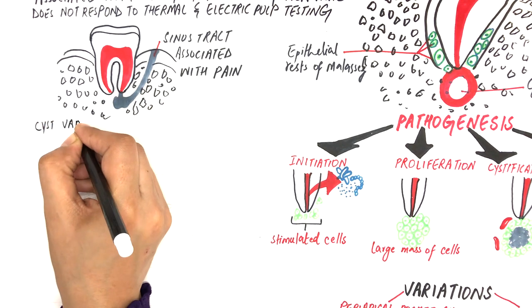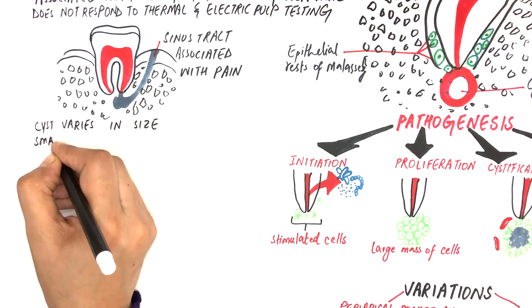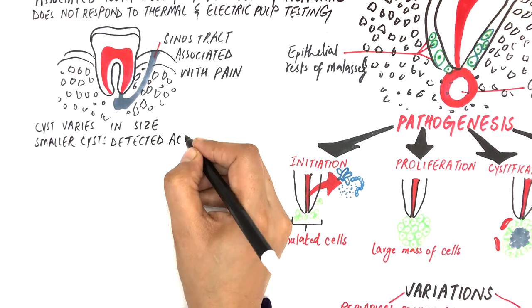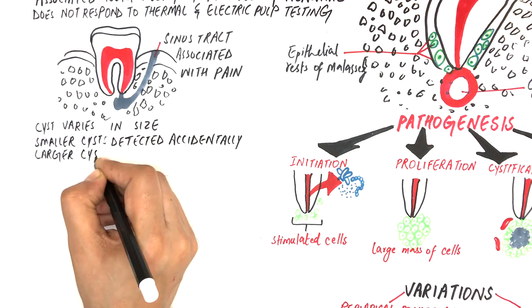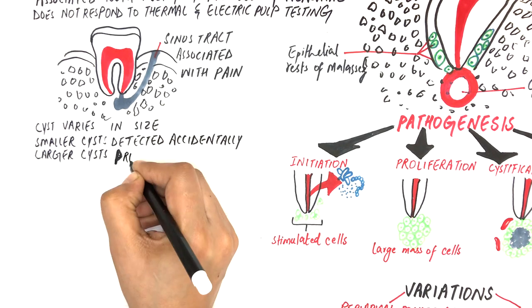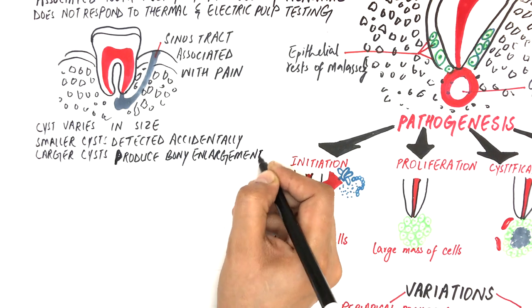The cyst varies in size. Smaller cysts are detected accidentally only during routine radiographic examination. However, larger cysts produce bony enlargement or even bony fractures of the jaws.